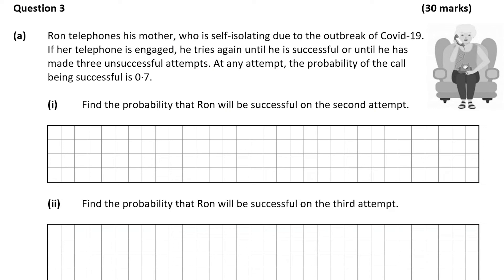Hello and welcome to the video. Matthew here and we're going to look at question 3, which is a 3D mark question on probability. Part A tells us that Ron telephones his mother who's self-isolating due to the outbreak of COVID-19. If her telephone is engaged, he tries again until he's successful or until he's made three unsuccessful attempts. At any one attempt, the probability of the call being successful is 0.7.